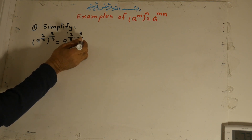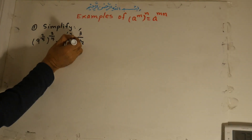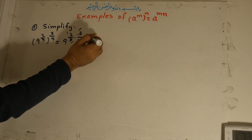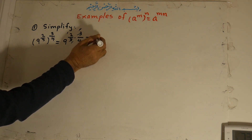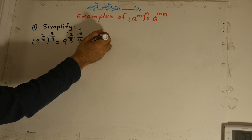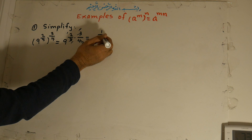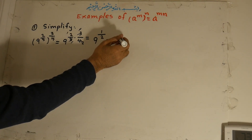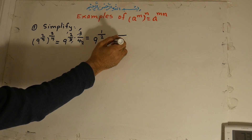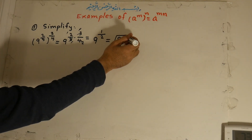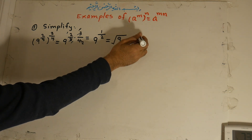This equals 9 to the power of 2 over 3 times 3 over 4. The 2 and 4 simplify, and 3 cancels with 3, giving 1 times 1 over 1 times 2, which equals 1 over 2. So this equals 9 to the power of 1 over 2, meaning the square root of 9. The square root of 9 equals 3, since 3 times 3 equals 9.